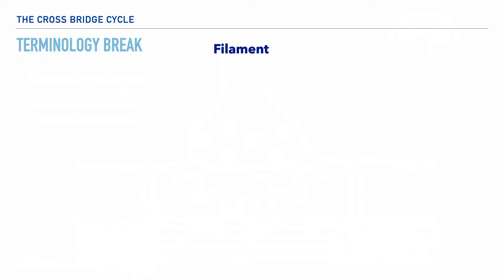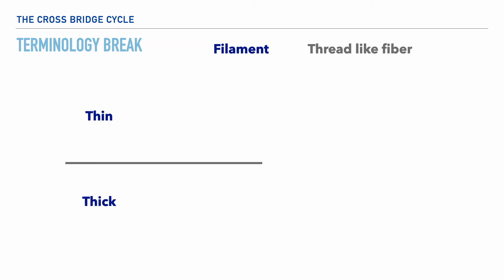Let's take a quick break to ensure that we're knowledgeable about what's meant when we use the term thick filament and the term thin filament. The word filament means thread-like fiber, so we have thin thread-like fibers and thick thread-like fibers. The thin thread-like fibers include actin, troponin, and tropomyosin. If you can remember AT&T, you'll have it, being that each of these terms begins with those letters. And the remaining filament is the thick filament called myosin.